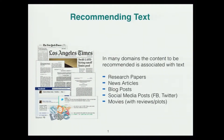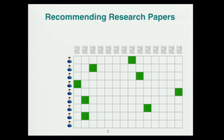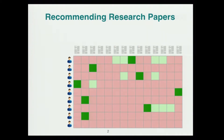In many application domains, the items to be recommended to users are associated with text, including research papers, news articles, blog posts, social media posts, movies with plot summaries, et cetera. In this work we focus on research paper recommendation. What you have is a matrix of users and papers, where users are rows and papers are columns, and you observe some likes given to papers by users. From these sparsely observed likes, you want to generalize to unobserved values and make decisions about what papers users like or do not like.